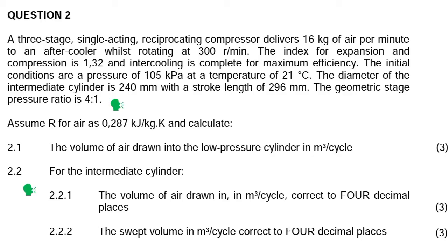A three-stage single acting reciprocating compressor delivers 16 kg of air per minute to an after cooler whilst rotating at 300 revolutions per minute. The index for expansion and compression is 1.32 and intercooling is complete for maximum efficiency. The initial conditions are a pressure of 105 kPa at a temperature of 21 degrees Celsius. The diameter of the intermediate cylinder is 240 mm with a stroke length of 296 mm. The geometric stage pressure ratio is 4 to 1. Assume R for air is 0.287 kJ per kg Kelvin and calculate.